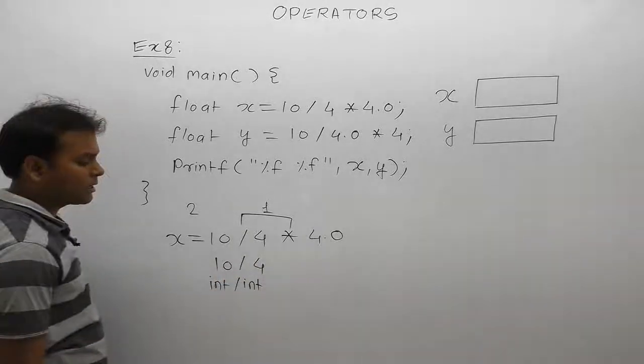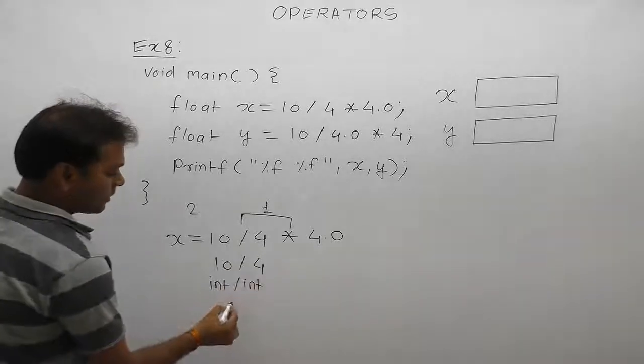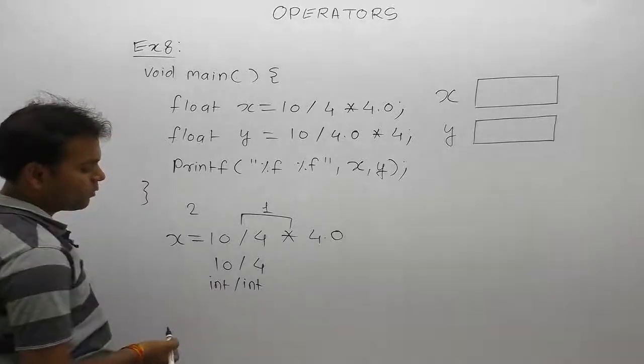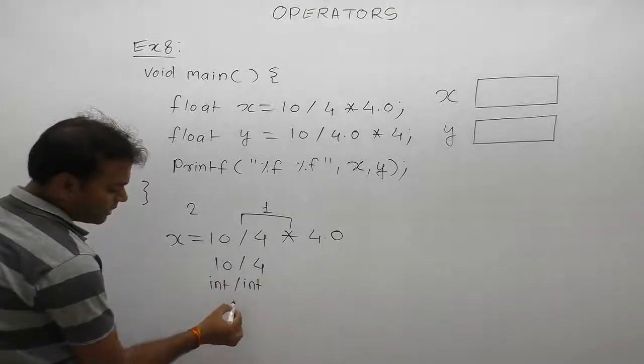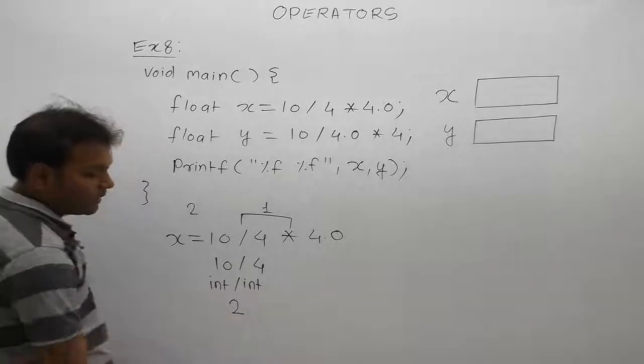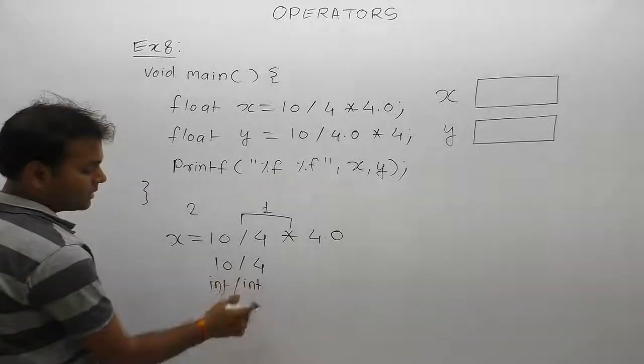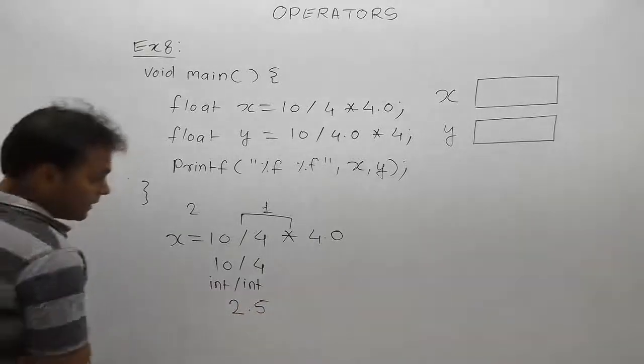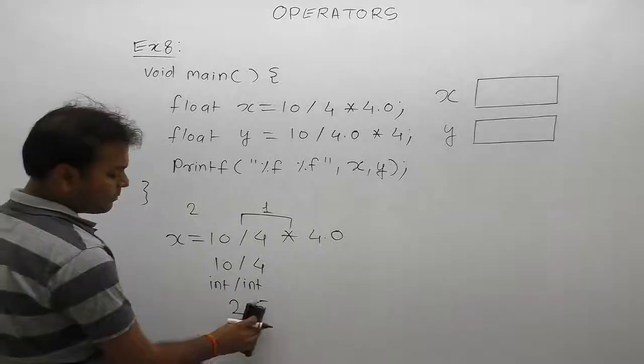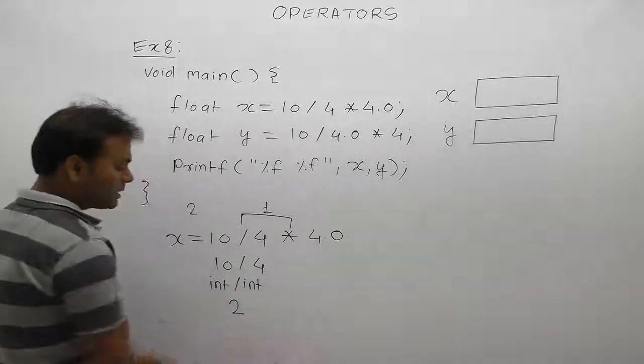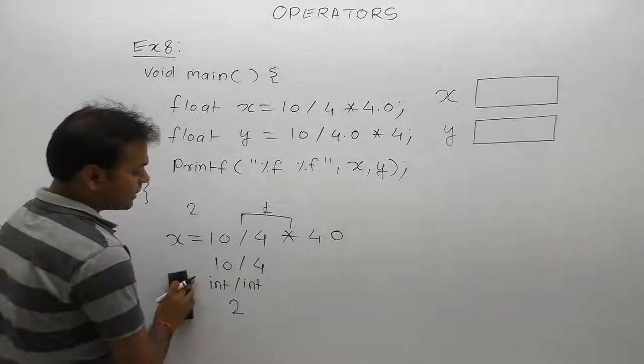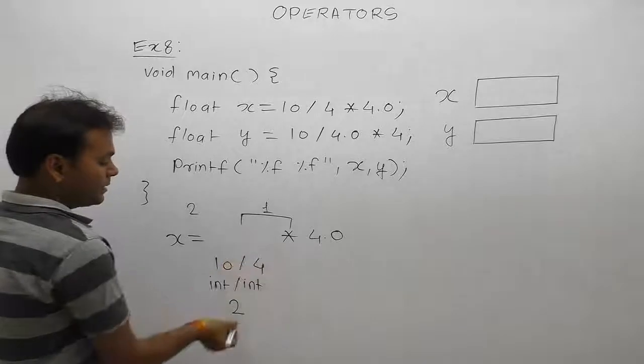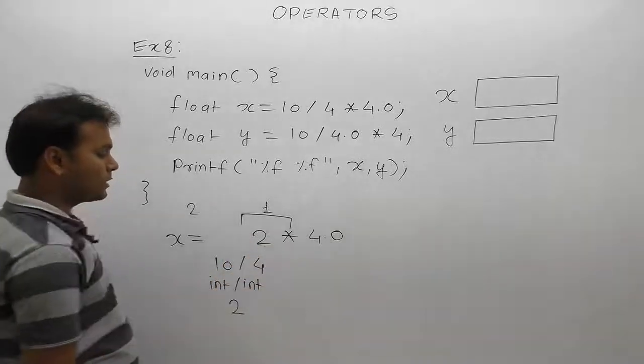The result should be 2.5, but the decimal part cannot be represented in integer form, so the result is 2. First one, 10 divided by 4, result is 2. Next, when the second operation is performed...